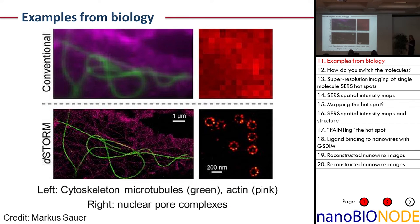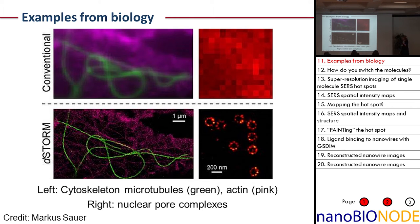Biology has been doing this with great success for the past five to ten years. Here's an example from Marcus Sauer's group showing cytoskeletal features: microtubules in green and actin filaments in pink. In the conventional diffraction-limited image, you can sort of make out the microtubules but the actin is pretty much hidden. Whereas in the super-resolution image based on localizing individual molecules switching on and off with time, you can get much better resolution of the features. This is even more dramatic in examples of nuclear pore complexes, where the diffraction-limited image shows just a smear of light, but the super-resolution image resolves these very small circular features within individual cells.